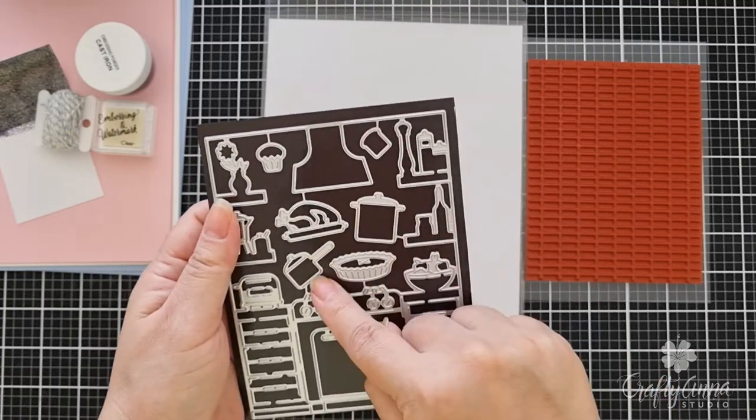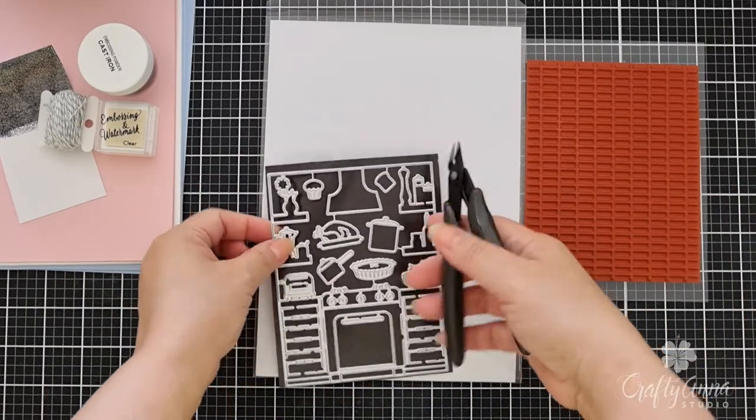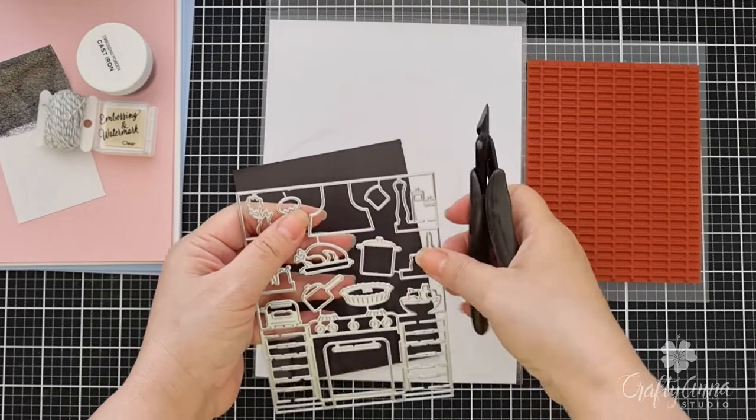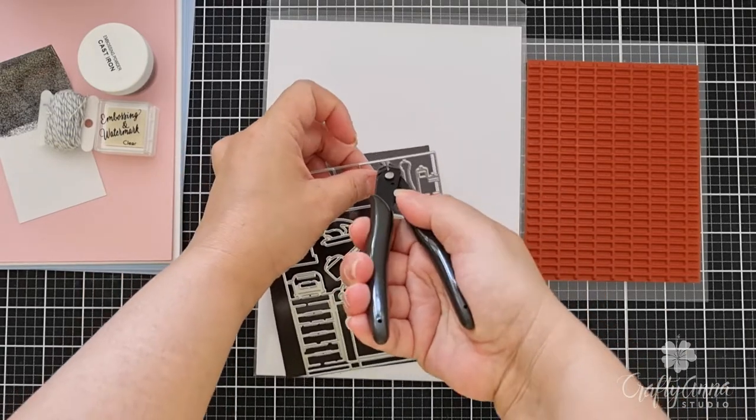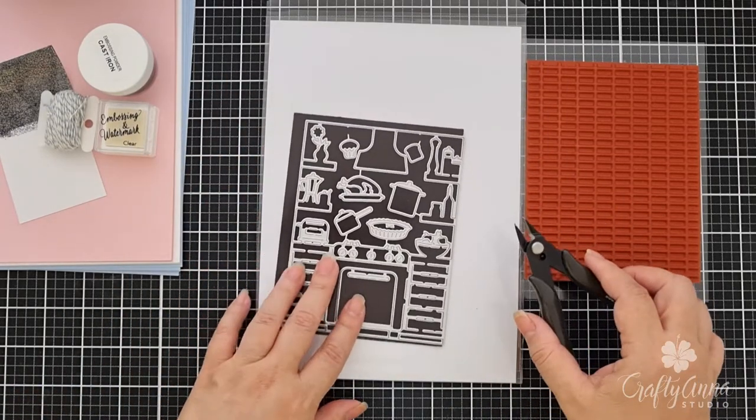To cut these elements apart, I use a wire cutter from Hero Arts. The cutting tip of these wire cutters are the perfect length to cut the dies apart. After I cut them, I place the dies at the back.